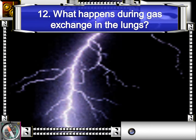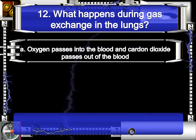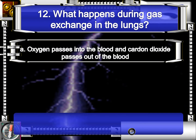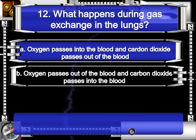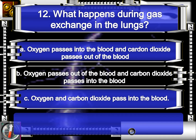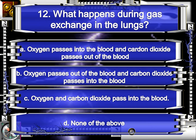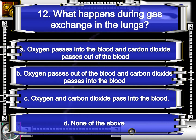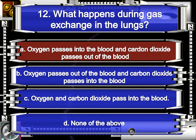For question number 12. What happens during gas exchange in the lungs? Letter A, oxygen passes into the blood and carbon dioxide passes out of the blood. Letter B, oxygen passes out of the blood and carbon dioxide passes into the blood. Letter C, oxygen and carbon dioxide pass into the blood. Letter D, oxygen and carbon dioxide pass out of the blood. The correct answer is letter A, oxygen passes into the blood and carbon dioxide passes out of the blood.